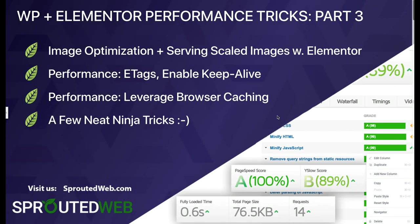Hi everyone, thanks for joining me today. My name is Charles from Sprata Web, and today is part 3 in our WordPress and Elementor performance series. In today's tutorial, we're going to briefly rehash some of the basics of image optimization and how to serve scaled images using Elementor, and continue covering how to solve common GTmetrics and page speed recommendations. Today we're going to cover entity tags, enabling keepalive, and how to leverage browser caching. At the end of this tutorial, I'm also going to share a couple of tricks that I use on a daily basis that I find useful with both Elementor and WordPress.